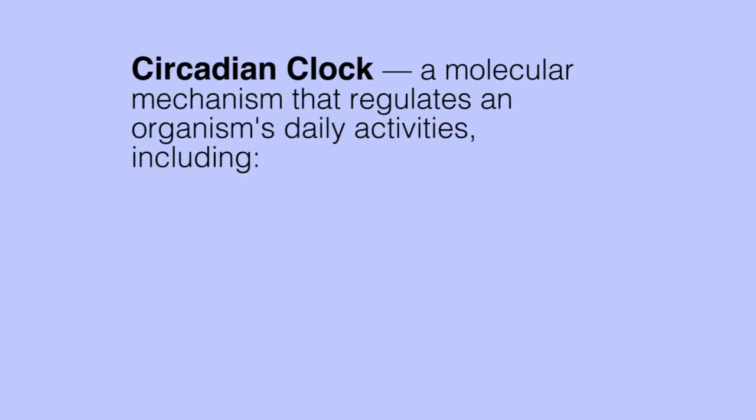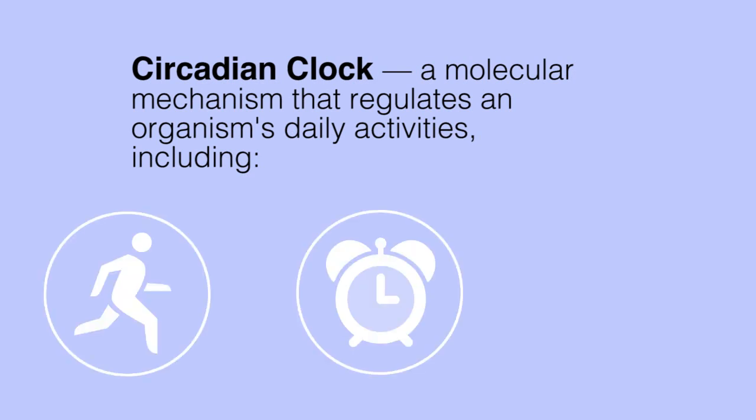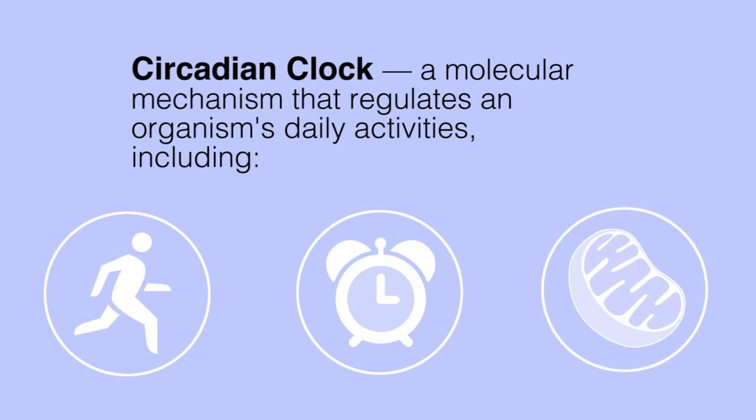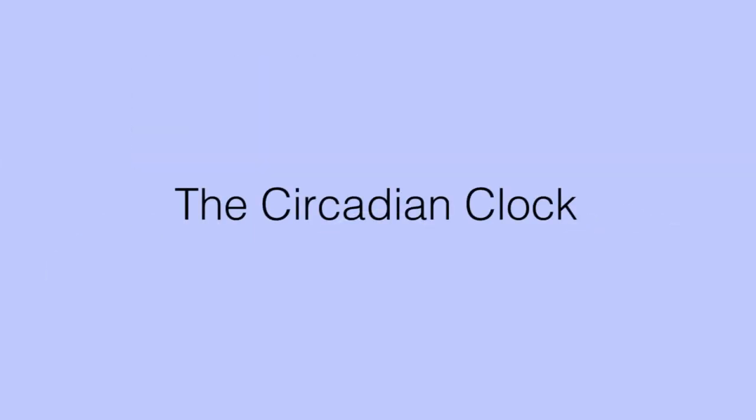A circadian clock is a molecular mechanism that regulates an organism's daily activities, including locomotion, sleep-wake cycles, metabolism, and more. The clock is set by environmental signals so that circadian rhythms normally match the cycles in nature. Our understanding of our circadian clocks has revealed the importance of getting light during the day, healthy sleep patterns, and having meals at certain times of the day. In fact, many diseases have been linked to eating and sleeping at odd hours that disrupt our circadian system.